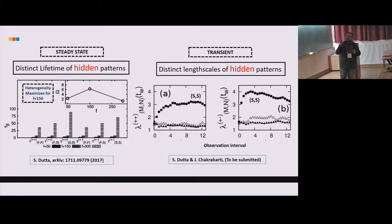This was for the steady state. In the transient regime we have also identified how the length scale of these slow and fast particles are changing. It shows that the slow particles actually contribute more in this pattern formation.